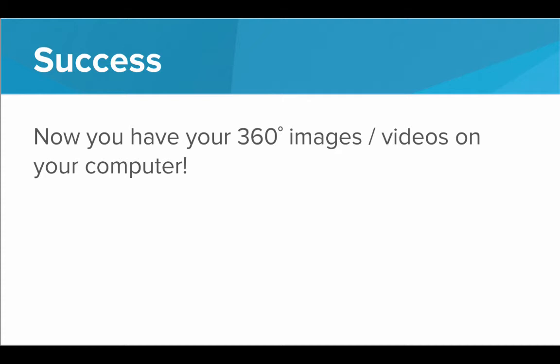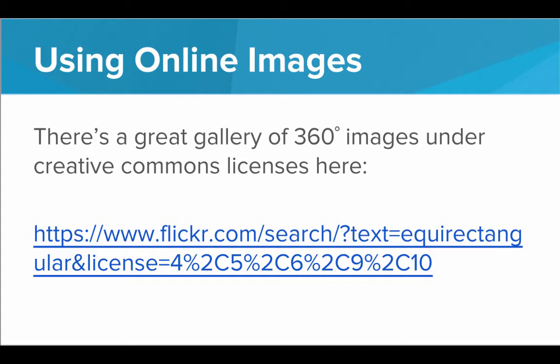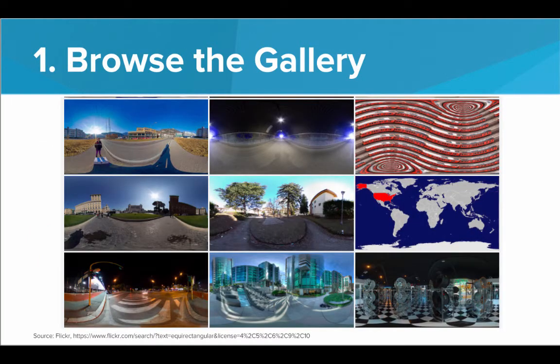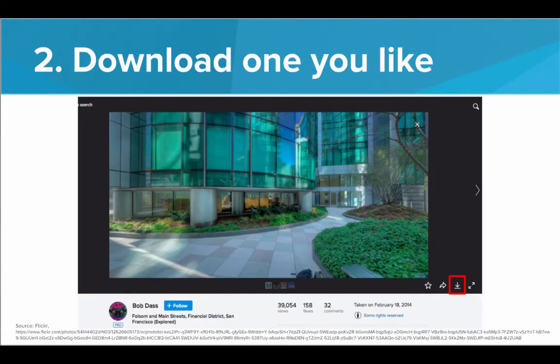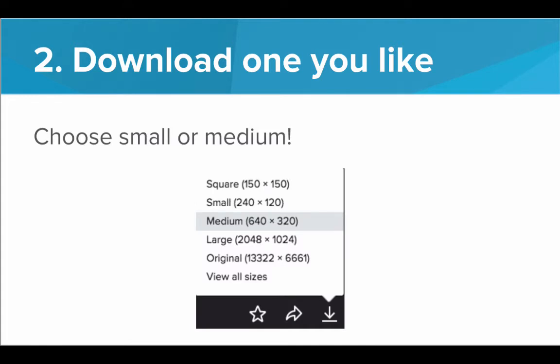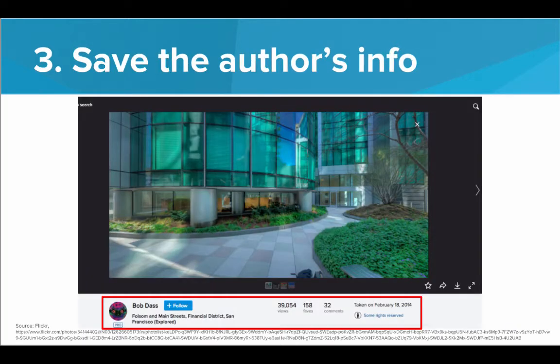If you don't have a camera, that's okay, because we can find images online. There is a great gallery of 360 degree images under Creative Commons licenses on Flickr. A Creative Commons license means that whoever took these photos is allowing everyone in the community to use them as long as they cite their sources. Browse the gallery and find an image you like, then download it using the download button on Flickr. Choose small or medium size, because a very large file will make your VR program run really slowly. Make sure to save the author's info — their name, the picture name, when it was taken — and also save the URL where you found the photo.